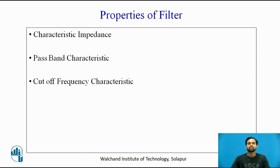The first property is characteristic impedance, represented by Z0. The characteristic impedance should match with the circuit to which it is connected throughout the pass band. This removes reflection losses.